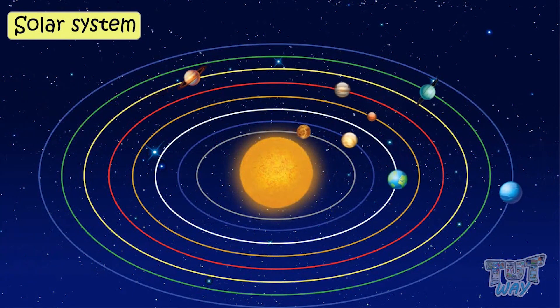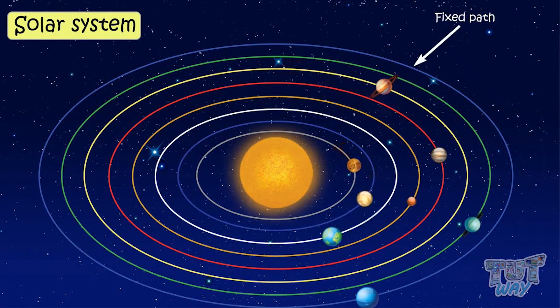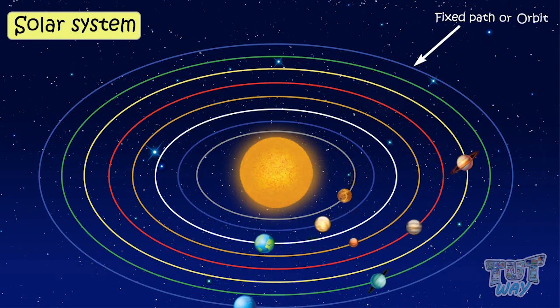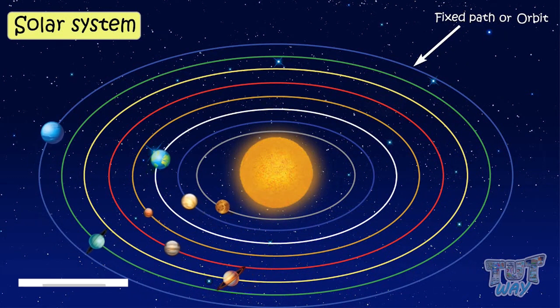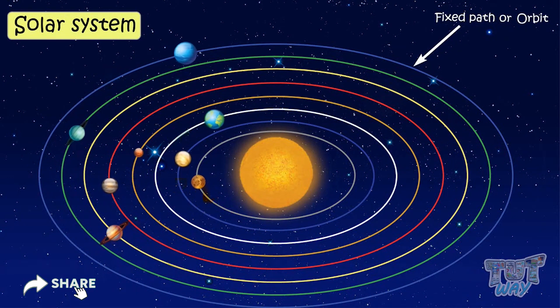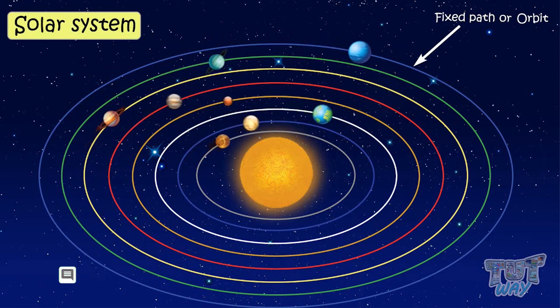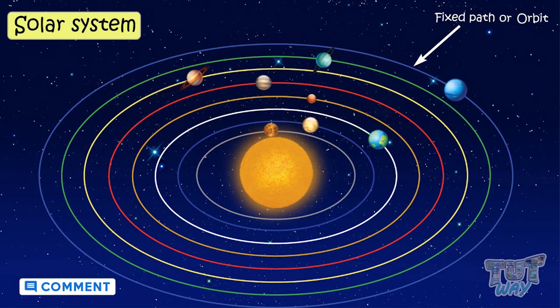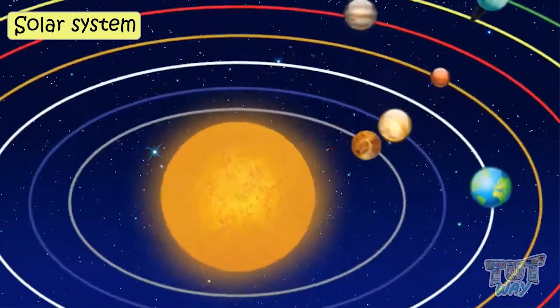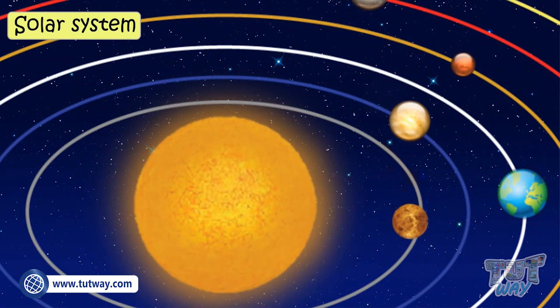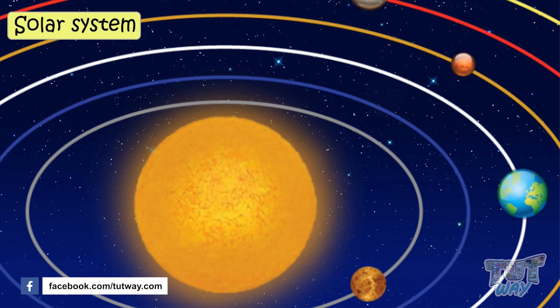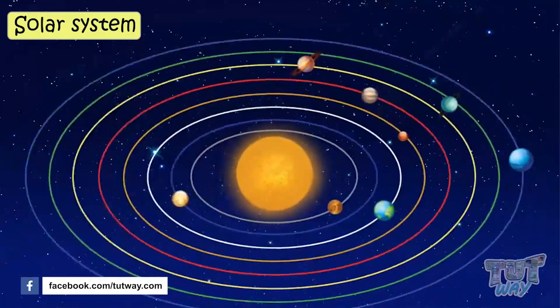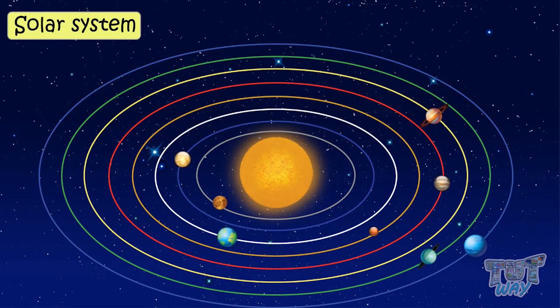They all revolve around the sun in fixed paths called orbits. Orbit is a fixed path on which a planet revolves. Each planet has its own orbit. Like Mercury will move only on this orbit. Venus will move only on this orbit. Likewise, all planets move in their fixed paths called orbits.